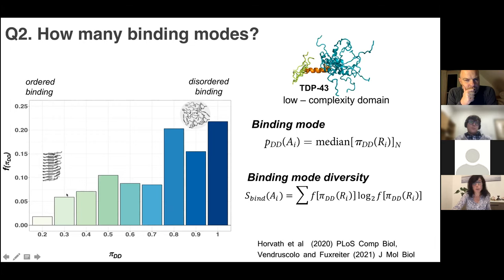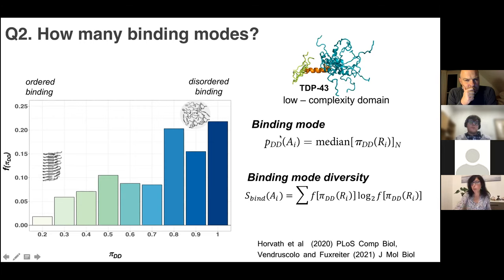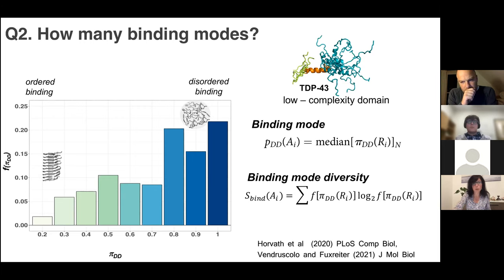For TDP43, most of the residues under most contexts prefer to sample disordered binding modes, so it will form a droplet. But there is a small probability it can also go to ordered binding modes. If I analyze this distribution, the median gives me the binding mode I would report for a residue. I also know there is binding mode diversity here, which I can compute as Shannon entropy from information theory—straightforwardly computed from this distribution—giving me the likelihood of changing the binding mode.